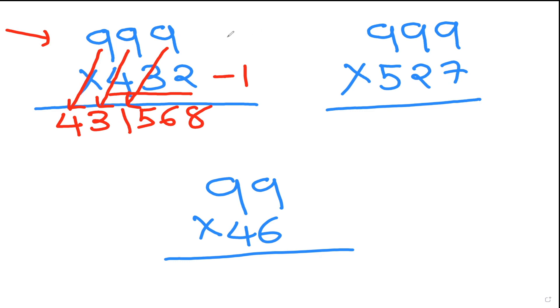So if I'm going to do 999 times 527, again the same thing, no difference. In this 527, I'm going to take away 1, which will give me 526.